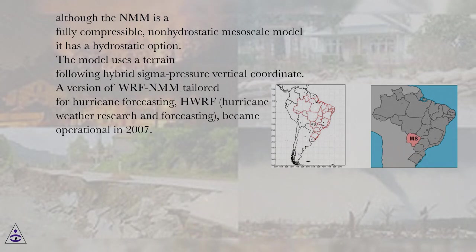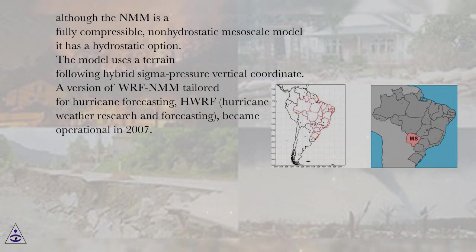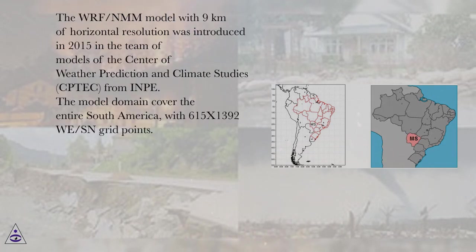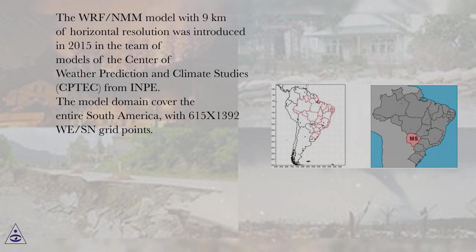A version of WRF-NMM tailored for hurricane forecasting, HWRF (Hurricane Weather Research and Forecasting), became operational in 2007. The WRF-NMM model with 9 kilometers of horizontal resolution was introduced in 2015 in the team of models of the Center of Weather Prediction and Climate Studies (CPTEC) from INPE.